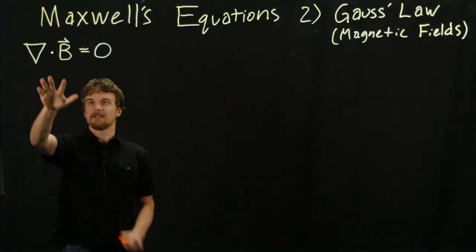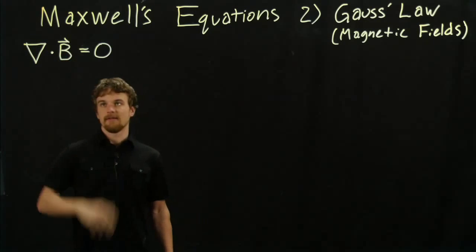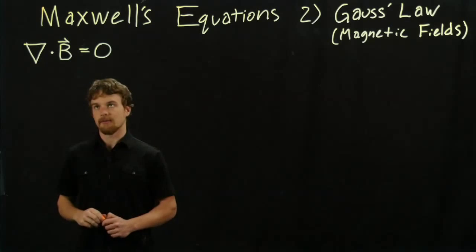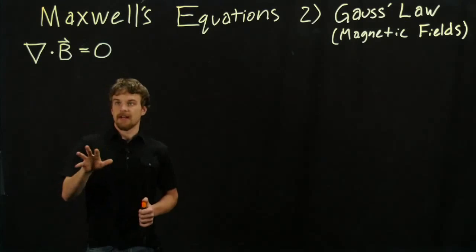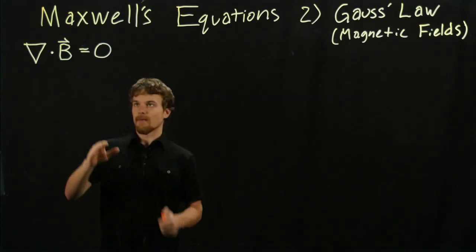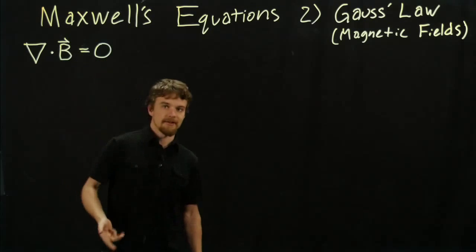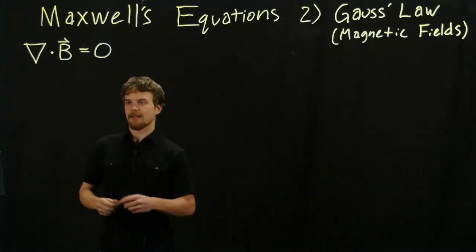This tells us the tendency of the field, the vector field B, which is how we express magnetic field, tells us the tendency of that field at any point to move out or in of that point. We can see that according to this law that's equal to zero, and that's interesting. We'll see what that implies later.